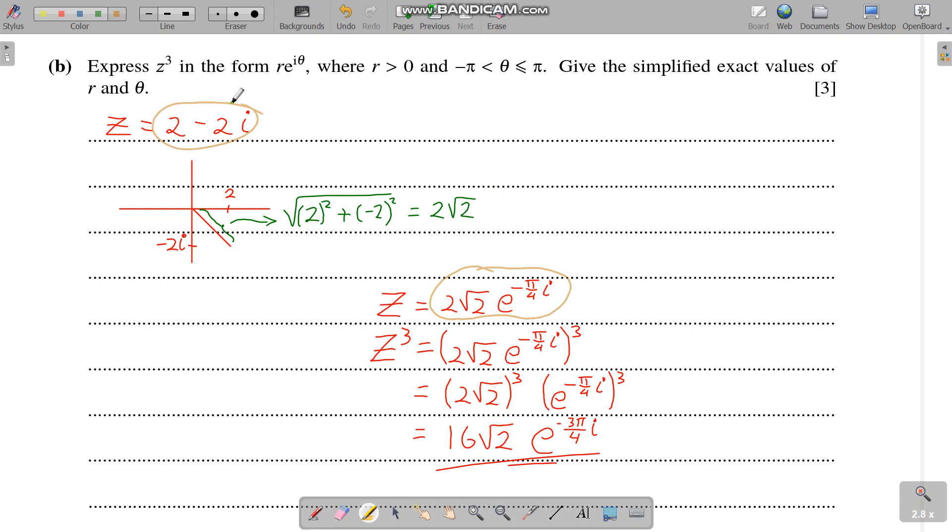If you want to cube both sides, we cube 2 root 2 and we get 16 root 2 - just use your calculator. And if we cube this guy here, we just multiply the powers, so we have minus 3 pi over 4i. So that's it, we get the final answer. All right, see you again next time.